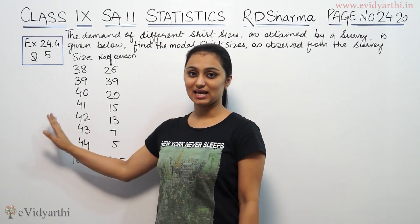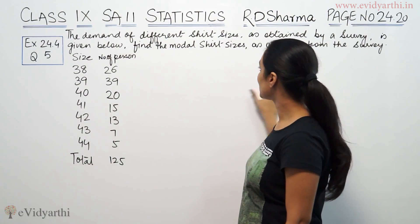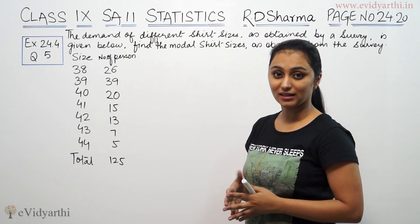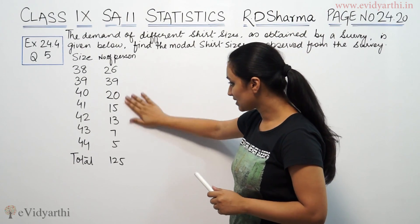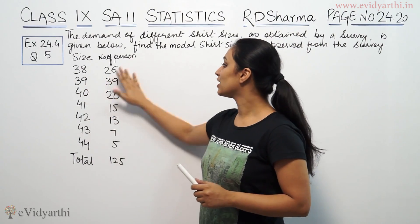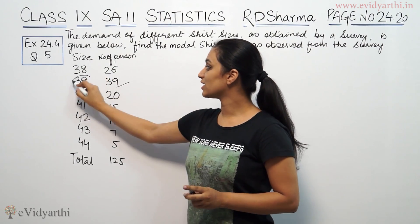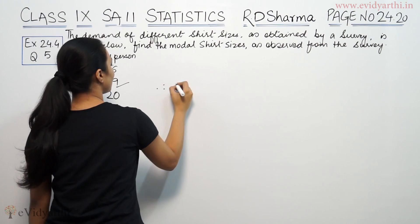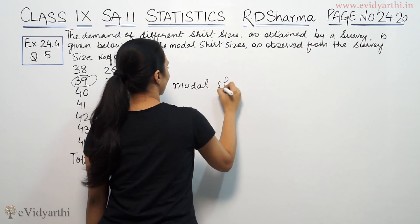So when we asked the demand, we will tell the model shirt size. The model shirt size means that the frequency is the highest. So the number of persons with the highest frequency — that size is the mode. The highest frequency is 39, so the model shirt size means 39. Therefore, the model shirt size is 39.